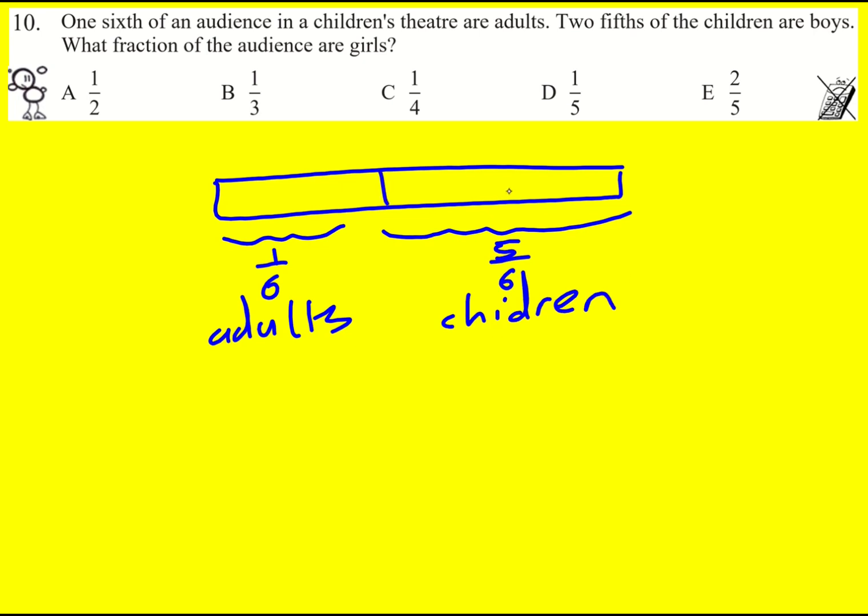And then if we take this five-sixths, we've got two-fifths of boys of the five-sixths, and then that means that three-fifths will be girls.